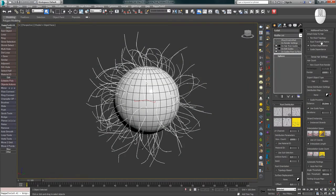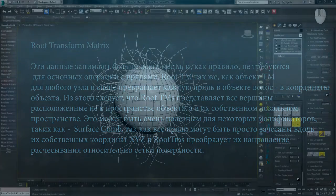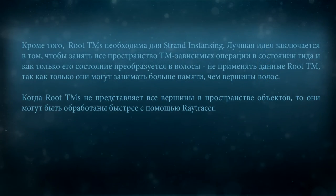Let's move to RootTransformMatrix. This option stores data that takes up the most space and is not required for basic strand operations. RootTransformMatrix, like the TransformMatrix object for any node in the scene, converts each strand in the hair object to object coordinates. This means RootTransformMatrix represents all vertices not in object space, but in their own local space. This can be very useful for some modifiers such as SurfaceCom, as all strands can simply be combed along their own x, y, z coordinates and RootTransformMatrix converts their combing direction relative to the surface mesh. Additionally, RootTransformMatrix is required for Strand Instancing. The best practice is to use all TransformMatrix-dependent operations in the guide state, and once the guide state is converted to hair, not to apply RootTransformMatrix data, as it alone can take up more memory than hair vertices.